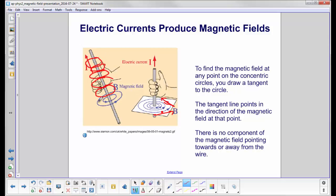Note, there is no component of the magnetic field pointing towards or away from the wire. Unlike electric charges, where the field actually originates on the charge or comes back to it, magnetic fields due to a wire have no component pointing towards it. They're always perpendicular to it.